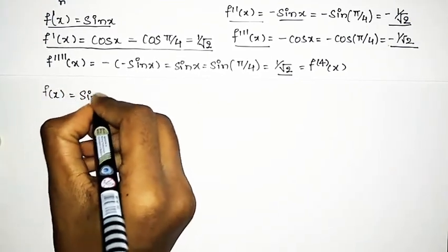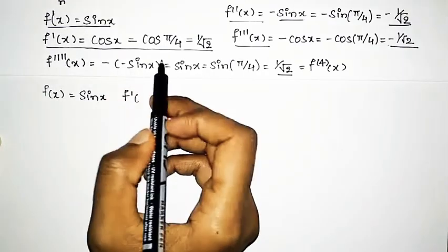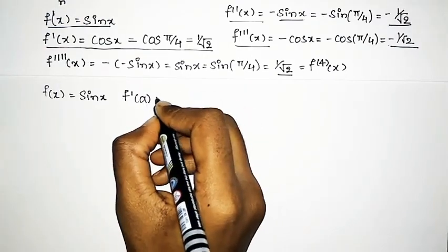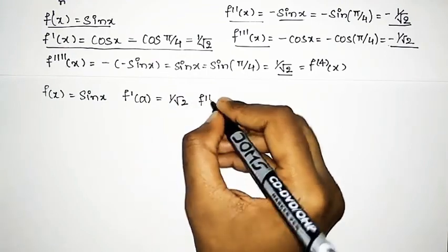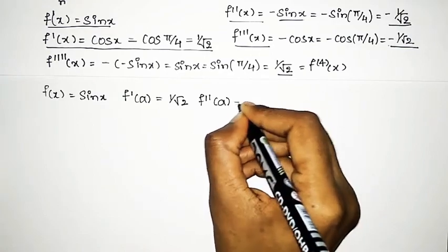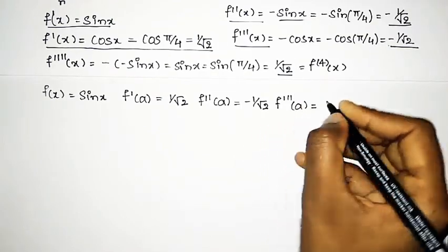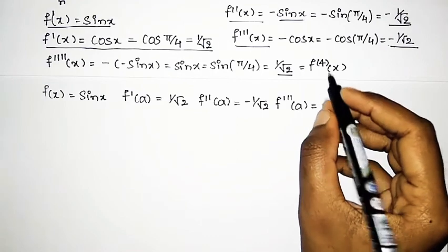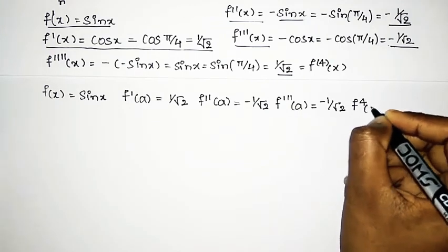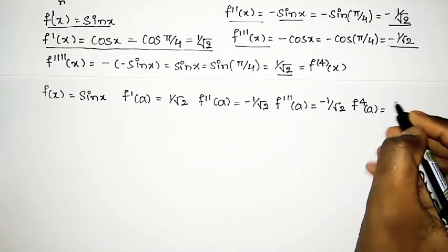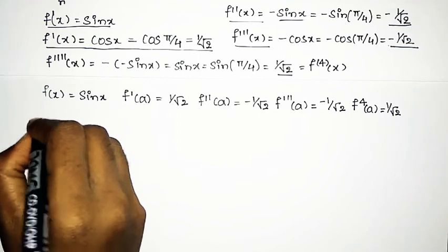To summarize the computed values: f(x) = sin(x), f'(a) = 1/√2, f''(a) = -1/√2, f'''(a) = -1/√2, and the fourth derivative f''''(a) = 1/√2.